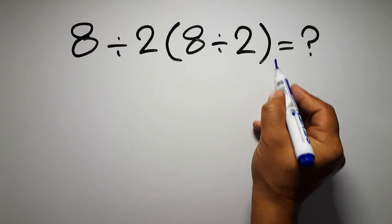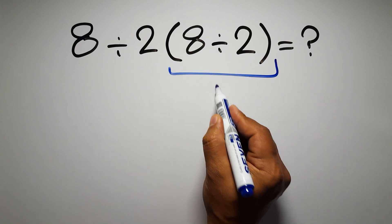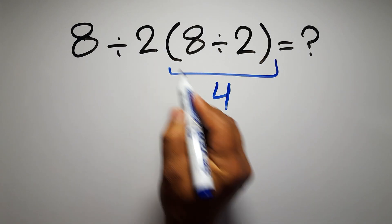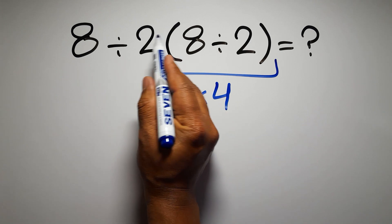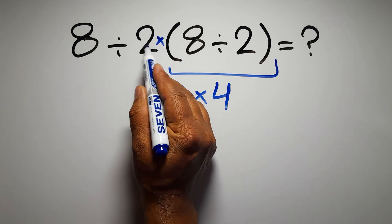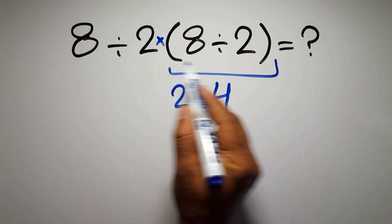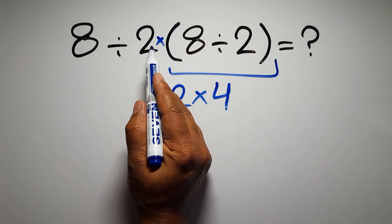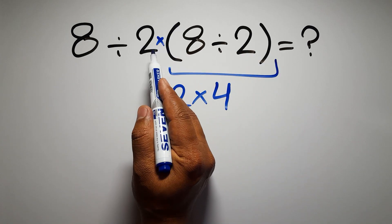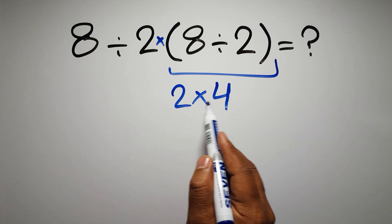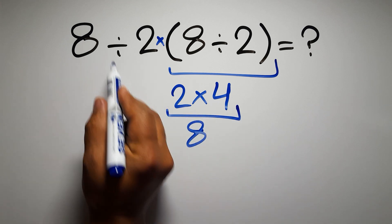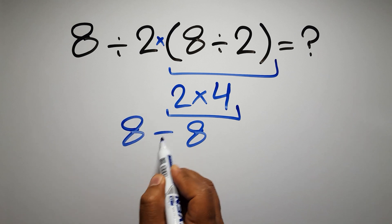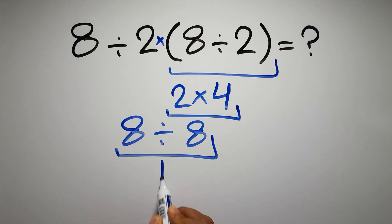8 divided by 2 gives us 4, and 2 times 4 — here we have a multiplication, because in mathematics, when a number is placed next to parentheses, it means multiplication, and we usually don't write a multiplication sign for brevity. So, 2 times 4 equals 8, and 8 divided by 8 gives us 1. But this answer is not correct.